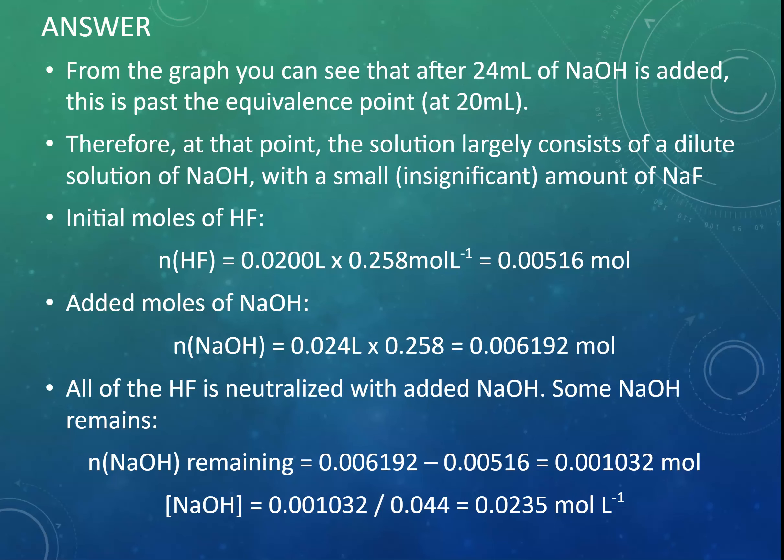So concentration is moles divided by volume. Now, because sodium hydroxide is a strong base, we know that if the concentration of sodium hydroxide is 0.0235 mol per litre, then the concentration of hydroxide ions is going to be exactly the same, just like in any strong base calculation. So if we know the hydroxide ion concentration, we can work out pOH, or if you prefer to go from hydroxide to hydronium and then to pH, you can do it that way as well. But you're going to come up with the same answer either way. And you can see that our answer of 12.37 is quite sensible.